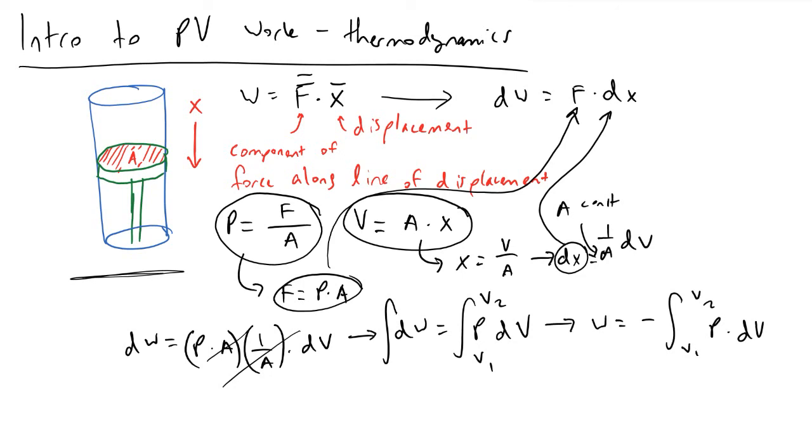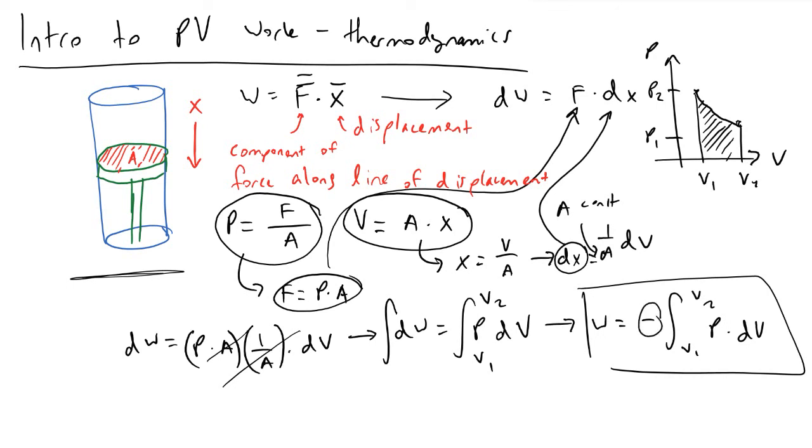In the case when pressure is constant, we can pull out pressure from this integral, but generally we will leave it in this final format. To plot this out, if we have graphs of pressure and volume, what we're really calculating as we are taking this integral is the area under the curve.